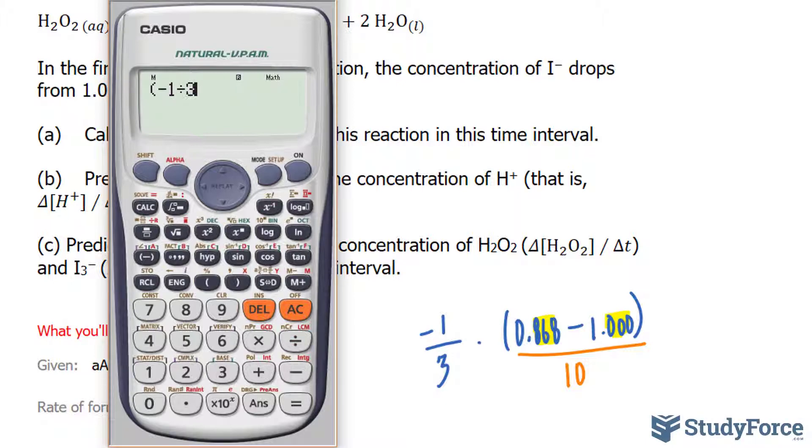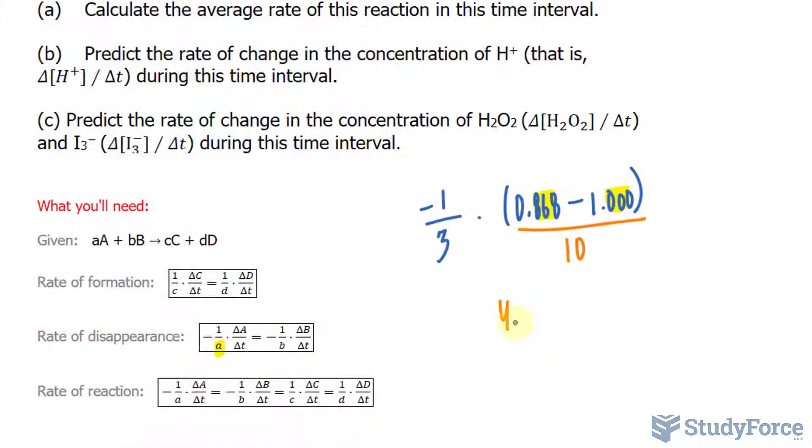We have negative 1 over 3, that first factor, times the difference at the top divided by 10, giving us a rate of 4.40 times 10 to the power of negative 3 molars per second. Let's write that down. 4.40 times 10 to the power of negative 3 molars per second. That's the answer to question A. Let's move on to B. We predict the rate of change in the concentration of hydrogen ions during this time interval.